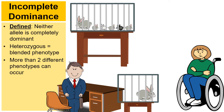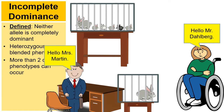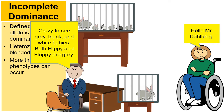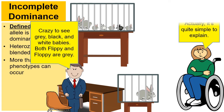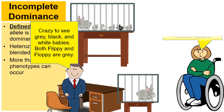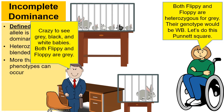Let's go back to our story. The two teachers are talking. 'It's kind of crazy to see gray, black, and white babies. Both Flippy and Floppy are gray.' 'Well, actually, it's quite simple to explain. Both Flippy and Floppy are heterozygous for gray, so their genotype would be a W and a B allele. Let's do this Punnett square.'